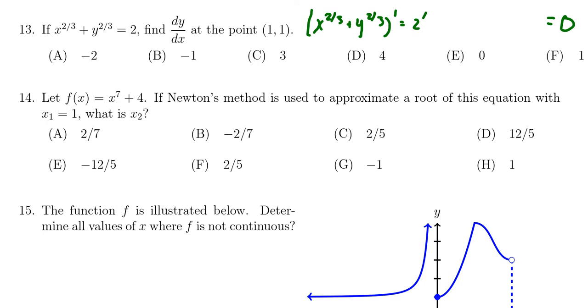Since we're taking the derivative with respect to x, we do need to make sure we take y prime when we take derivatives of y. So the derivative of x to the two-thirds will be two-thirds x to the negative one-third. The derivative of y to the two-thirds will be similar. It's two-thirds y to the negative one-third, but you have to also times that by y prime.